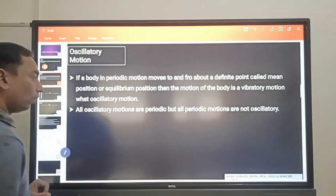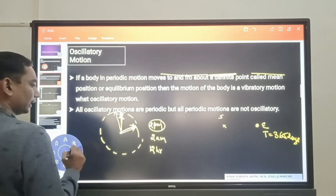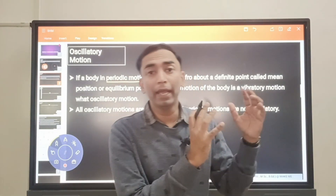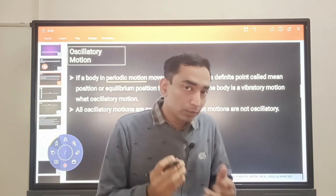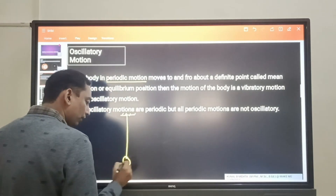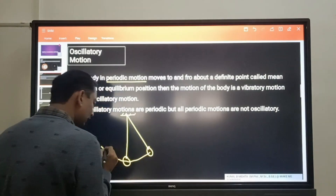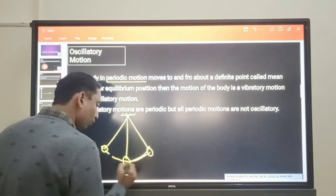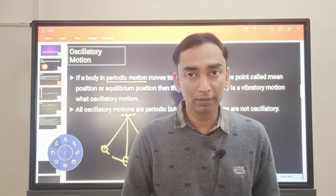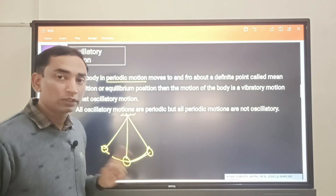Now, oscillatory motion. Oscillatory motions are a type of periodic motion — you must understand that. Oscillatory motions are periodic, but they are to-and-fro or back-and-forth. Let us take an example of a simple pendulum: there is a point of suspension, a string, and the bob. If you give the bob a little push, you will see that it executes oscillatory motion — it goes to and fro along a fixed path in a fixed time interval, and this motion repeats again and again.